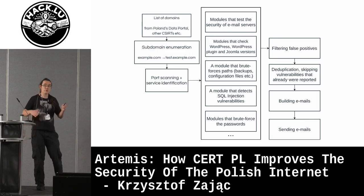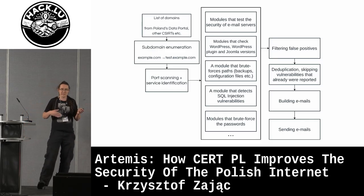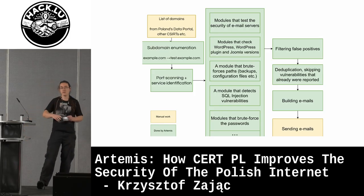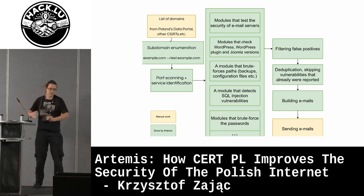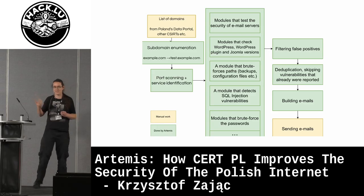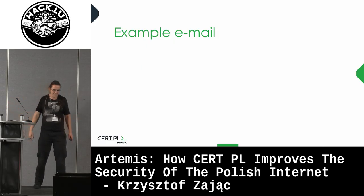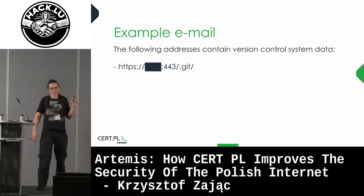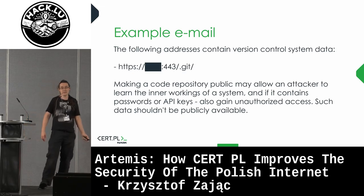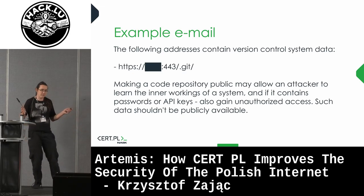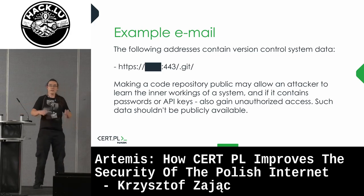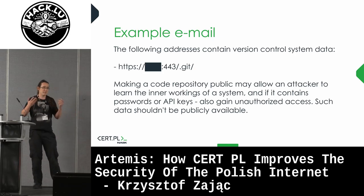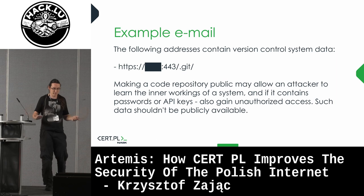The things we need to do manually — besides managing and debugging the system — are finding a list of domains, putting it into the system, and sending the package of reports the system prepares, after some sanity checking. This is an example of the email: we say what the problem is, where the problem is, and why it is a problem — for example, that making a code repository public may allow an attacker to do various things. We send this, but in Polish, to our entities, so that we don't have to write emails manually, because it's boring and a waste of human potential.